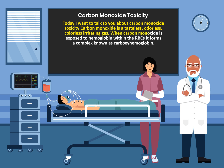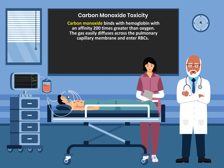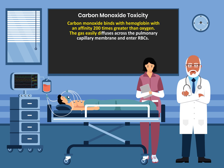When carbon monoxide is exposed to hemoglobin within the red blood cells, it forms a complex known as carboxyhemoglobin. Carbon monoxide binds with hemoglobin with an affinity 200 times greater than oxygen. The gas easily diffuses across the pulmonary capillary membrane and enters the red blood cells.